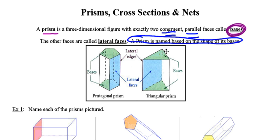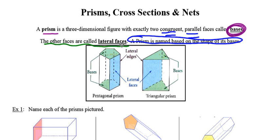In this picture, the green shaded polygons represent the bases — they're parallel and congruent. Over here, the green shaded polygons again represent the bases; they're congruent and they're parallel. Because the base is in the shape of a pentagon, we say that this first one is a pentagonal prism. Because the base of this one is in the shape of a triangle, we say that this is a triangular prism. Those other faces that make up the prism are called lateral faces, and the lateral faces are rectangles.